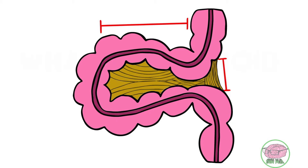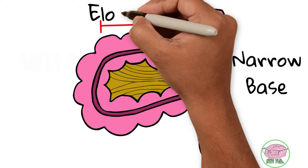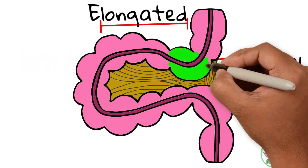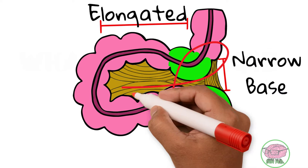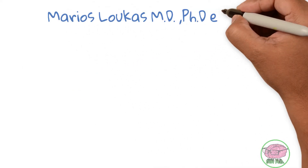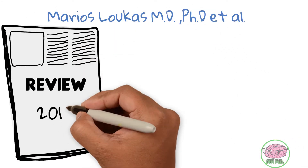The sigmoid mesentery is both narrow-based and elongated. Two segments of the sigmoid are close together, making it easy for one to loop over the other. Dr. Lucas and his team published a review in 2012.